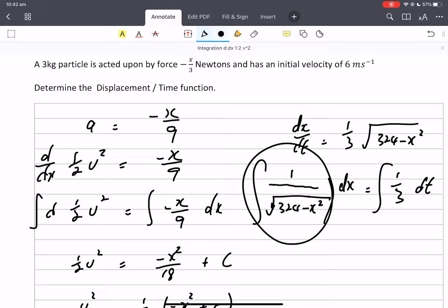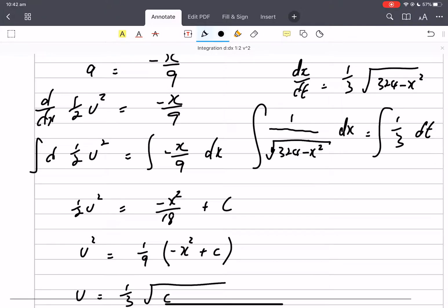We love the look of that because we love our trig relationships. It's on our formula sheet, no problem. So that becomes arc sine. 324 is 18 squared, so it's going to be arc sine of x on 18 equals t on 3 plus c.